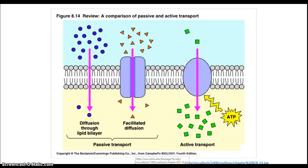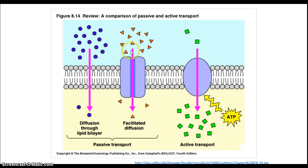What we see here is a summary of the differences between these two types of transport — passive transport and active transport. Passive transport is the movement of molecules from high to low concentration, and can be simple, where molecules move straight across the membrane by themselves, or facilitated by proteins embedded in the membrane. Active transport, on the other side, is the movement of molecules from low to high concentration against their concentration gradient, which requires energy in the form of ATP.